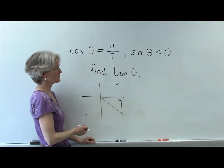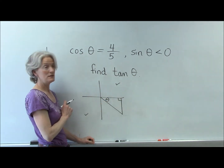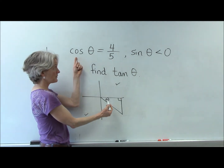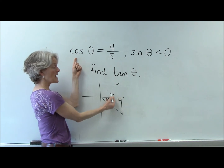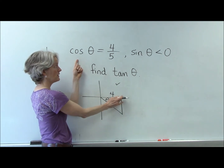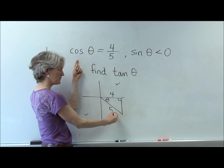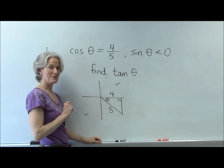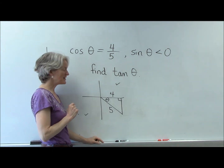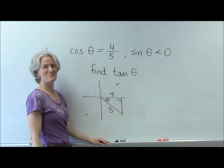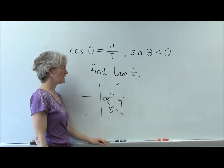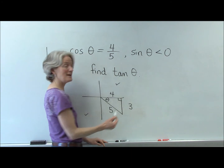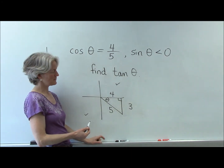If my cosine is 4/5, I put the 4 on the x-axis — it's positive because it's going over to the right. And the hypotenuse is 5. I'll use the Pythagorean theorem, or just recognize my Pythagorean triples. This looks like a 3-4-5 triple. Now you might put a 3 there, but what do you have to be careful about? The sign of it — positive or negative.